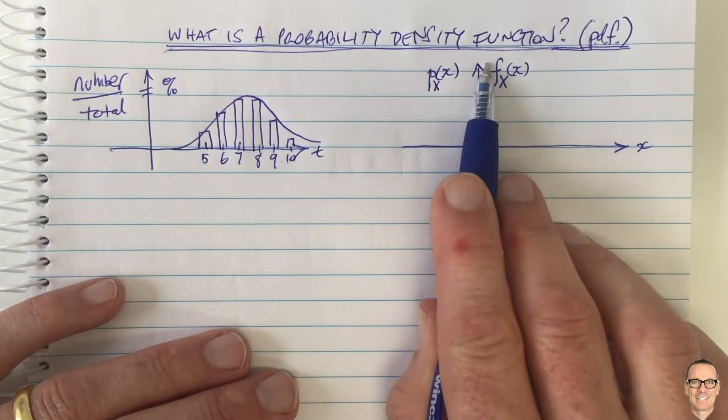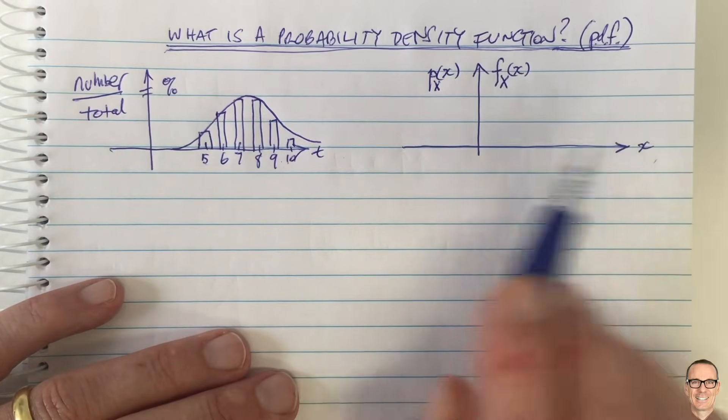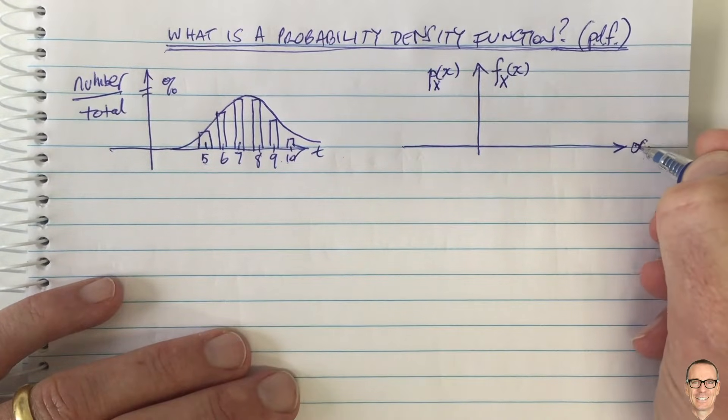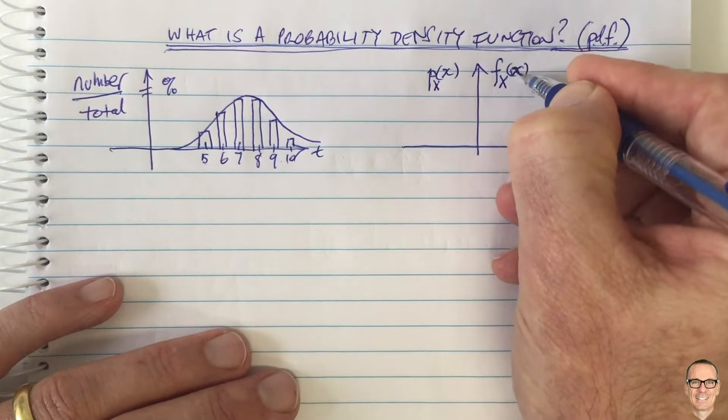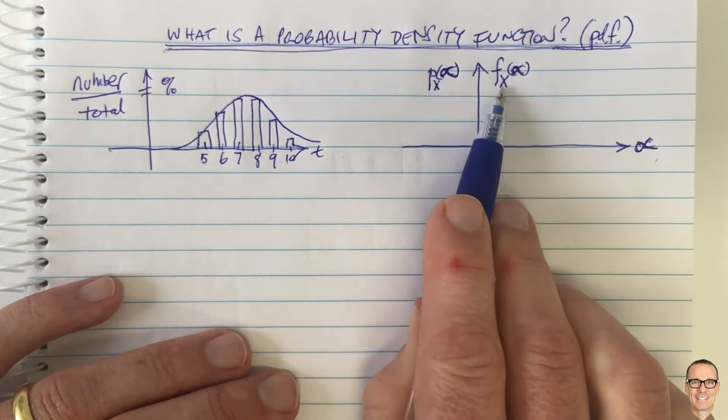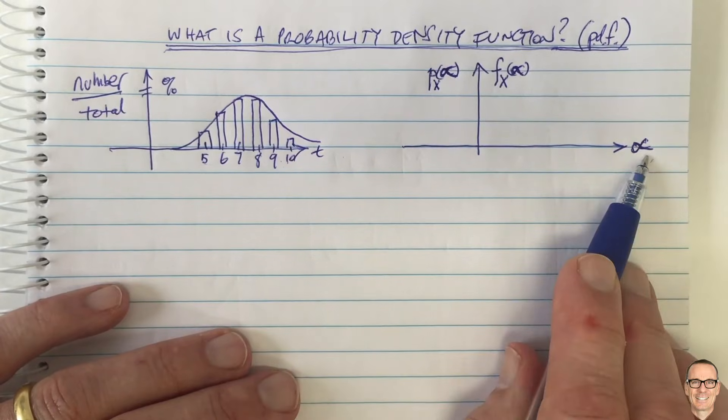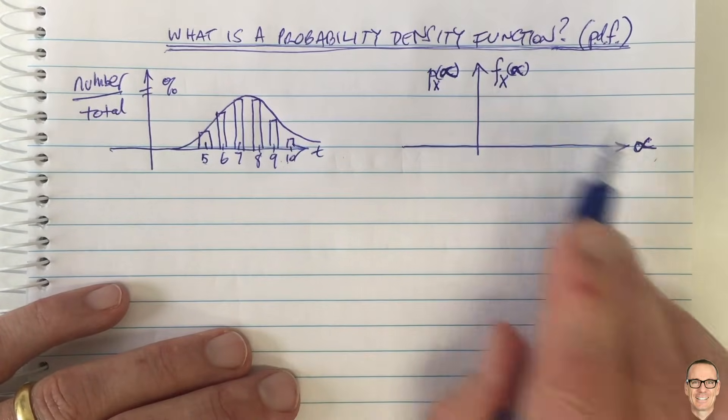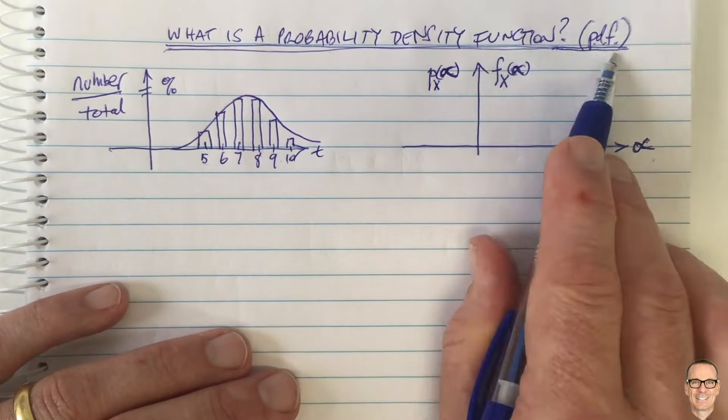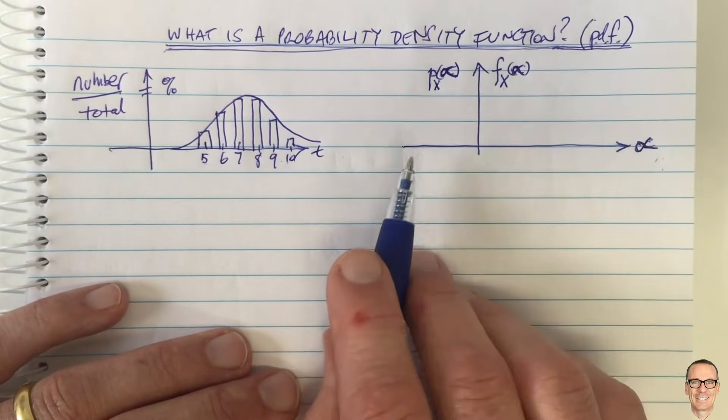And so we're just going to use x to indicate whichever random variable we're looking at. You might have y as a different one, z as a different one, however you label them. And the capital is the subscript to tell you that that's the probability density function for that random variable. And the thing in the brackets is simply what you plot against. So we could equally change the little x to alpha here and call this plot with respect to alpha. It would still be the probability density function for the random variable x. It's just you're using a different variable to plot it. The capital X tells you it's the PDF, probability density function, for the random variable x. The thing in the brackets is just what you're plotting it against.